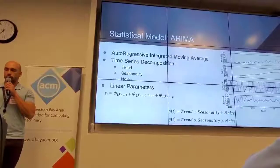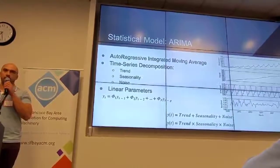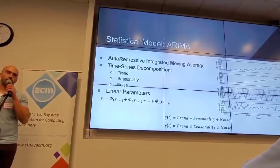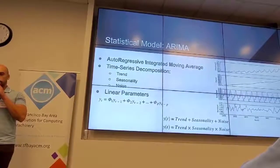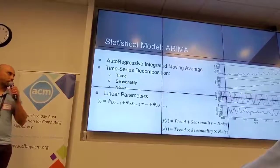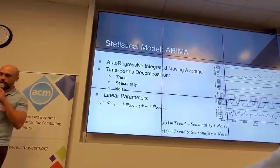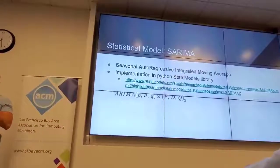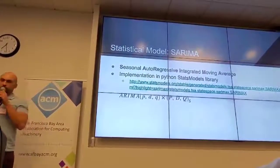Key characteristics to examine are: first, is it stationary — meaning statistical properties do not change over time? Second, is there seasonality, i.e., periodic fluctuations? Third, is the target variable autocorrelated — meaning similarity between observations as a function of the time lag between them?